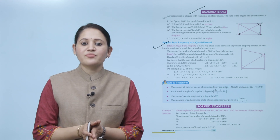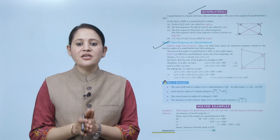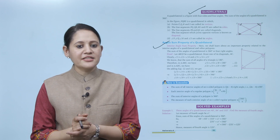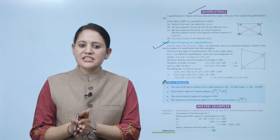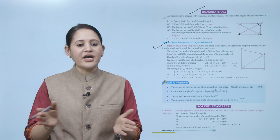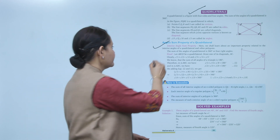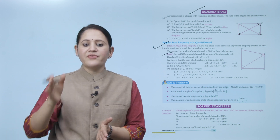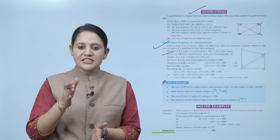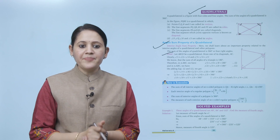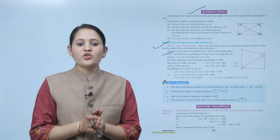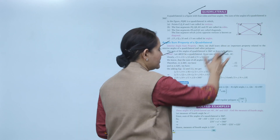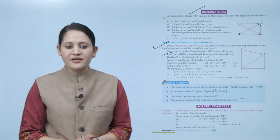Next is the angle sum property of quadrilateral — interior angle sum property. We shall learn about the important property related to the interior angles of a quadrilateral and other polygons. The sum of angles of a quadrilateral is 360 degrees or four right angles. Proof: let ABCD be a quadrilateral; draw one diagonal AC.